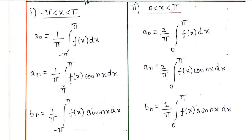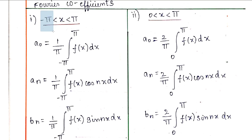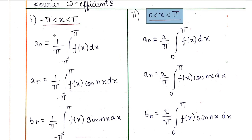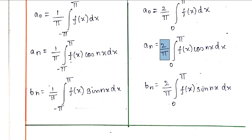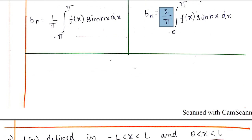There are two cases: minus pi to pi and 0 to pi. That's the difference. Let's look at the difference in this video.